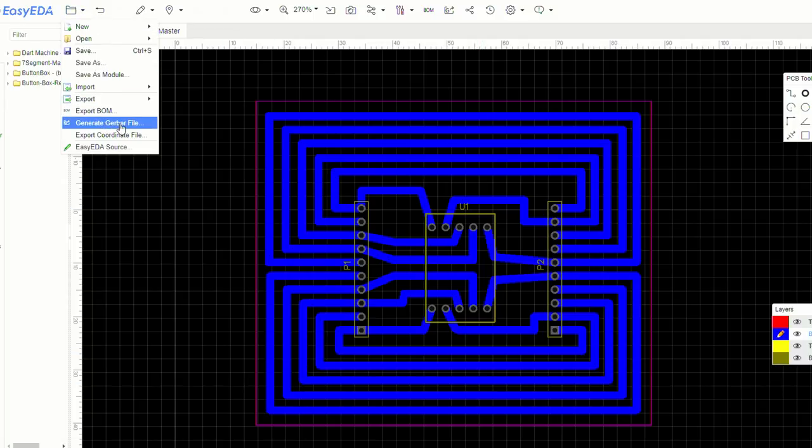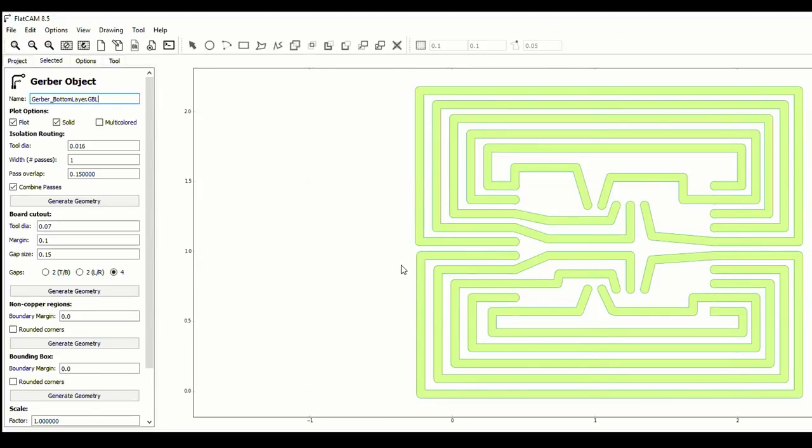Gerber files are gonna be used in the next program to actually create G-code. So that next software is called FlatCAM, and as you can see here I imported one of these Gerber files and created G-code for the X-Carve to actually cut the traces on the copper PC board. Now that I have my Gerber files I can then export to G-code.